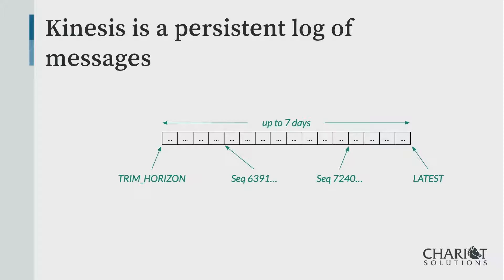Messages are persisted by default for one day, but up to seven days. Within that seven-day window, when you connect to Kinesis you can say you want to start at the current head of the queue — the latest message — or you want to start at the oldest message in the queue, the trim horizon, and read forward. Once a message gets past the trim horizon, it's gone — seven days, and then they're deleted.